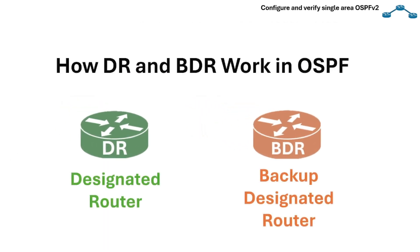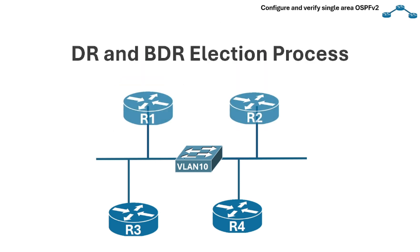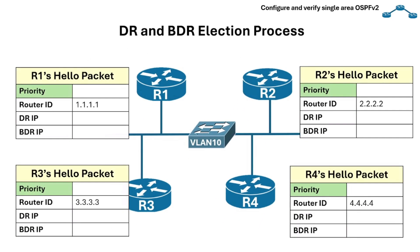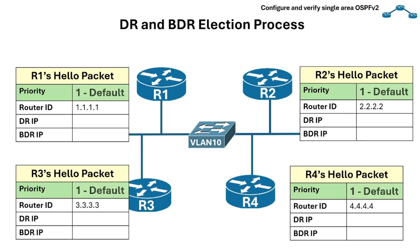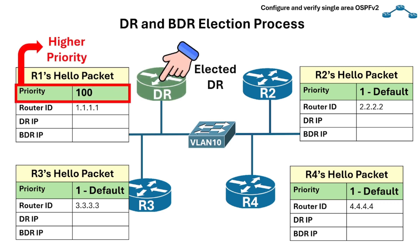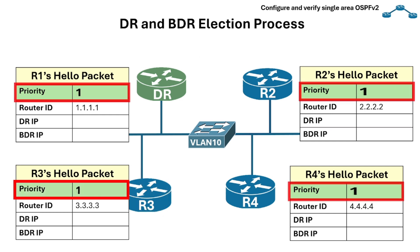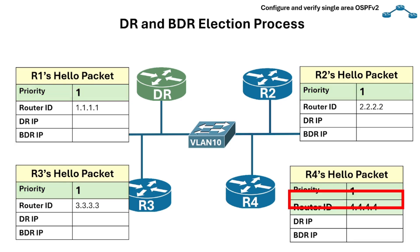On a shared LAN, OSPF elects a designated router and a backup designated router to reduce unnecessary adjacencies and flooding. The DR election process is based on a parameter in the OSPF hello packet called priority. By default, every router has priority 1. A router with a higher priority value is eligible to be elected as the designated router on the LAN segment, and a router with priority 0 is not eligible in the election process. If priorities are tied between all routers, the highest router ID is chosen.